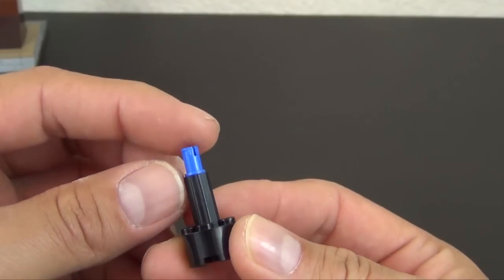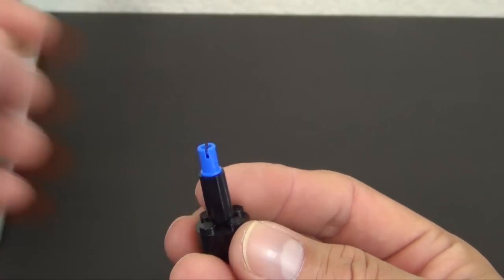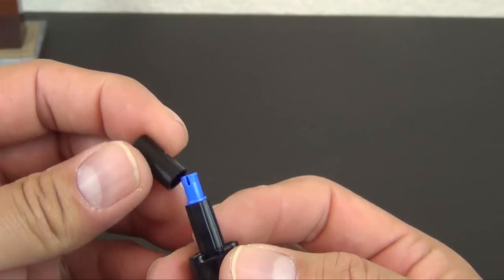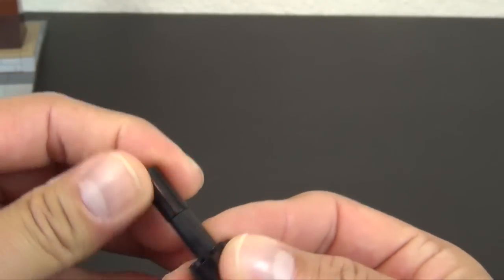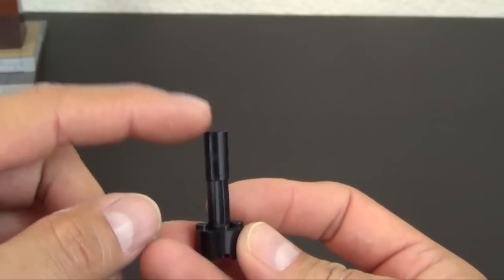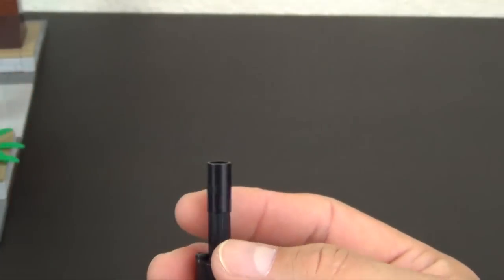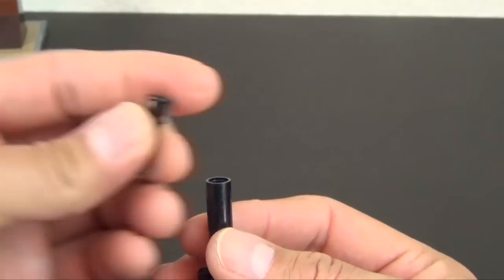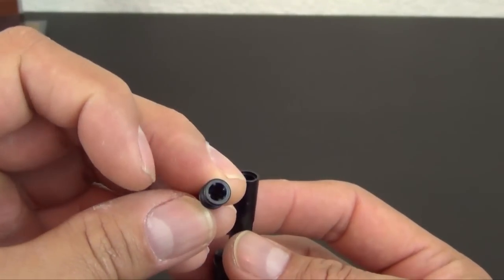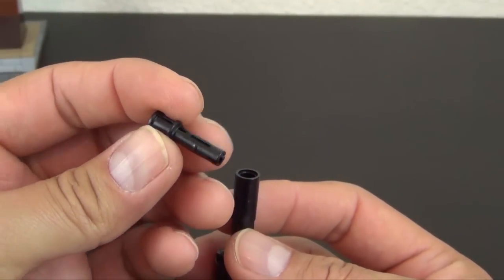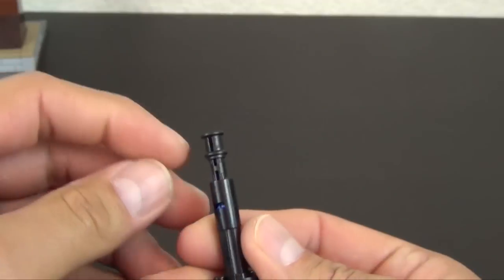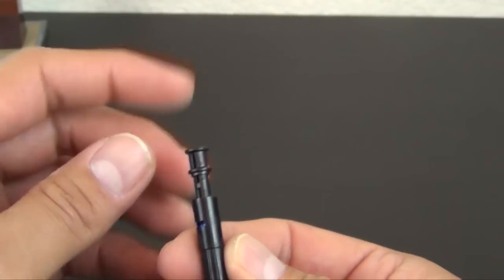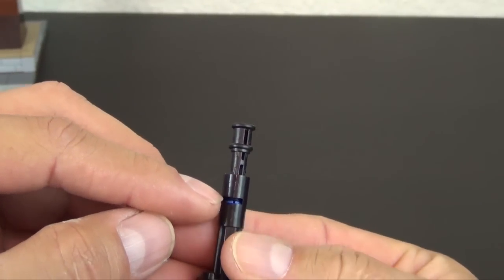Then we're going to connect this blue half-axle, half-Technic pin. And we have a Technic pin joiner, so now we can see we're creating this base element.